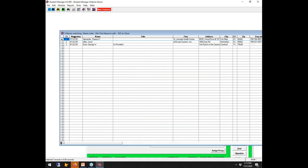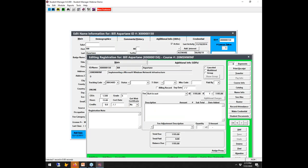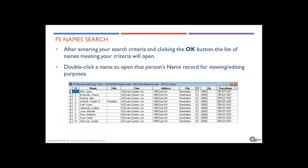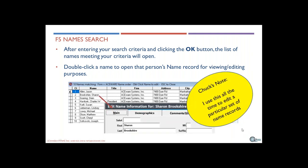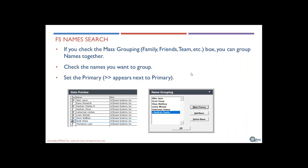F5 is great if you want to edit a group of names from a given company or location — bring up those names and edit all of them without going back to the find window. The mass grouping feature lets you group all names together, such as all the Havliceks or all folks from ACEware, and identify who the primary person is as the point of contact for that group.